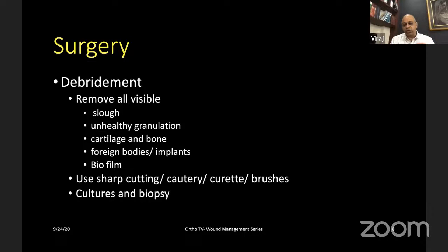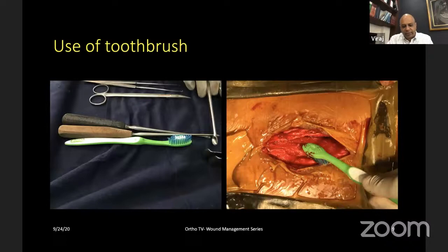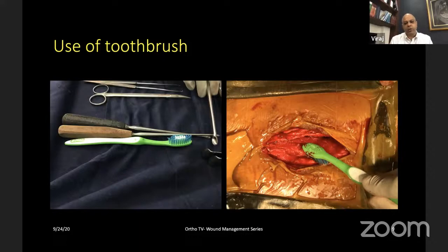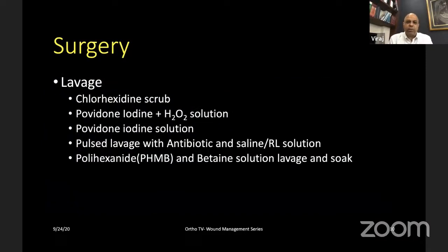I'll keep biofilm discussion brief as it's a vast topic. For debridement, I use sharp curettes and brushes of various sorts, and always take cultures and biopsies. One tool I've started using frequently is a toothbrush — particularly useful when implants can't be removed, as the bristle tips reach into little ratchet spirals, nooks and crannies that gauze or curettes cannot access. It's a simple, inexpensive, disposable tool available anywhere. The other critical element is lavage.